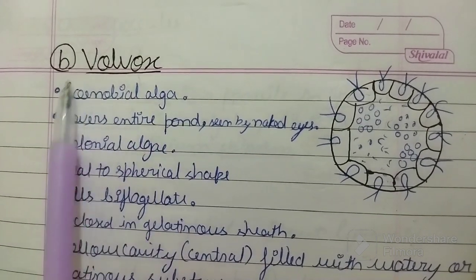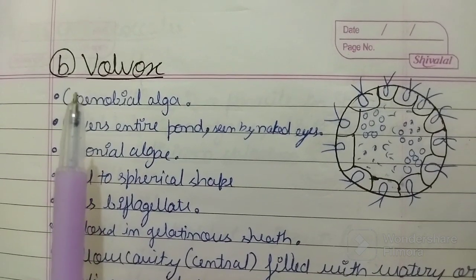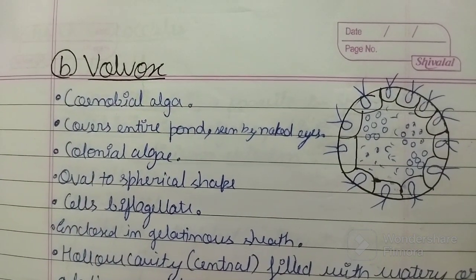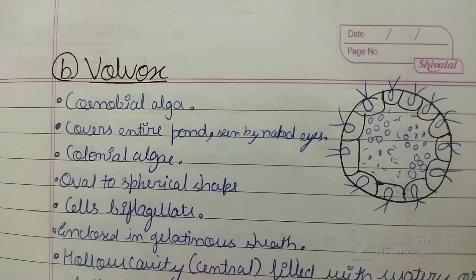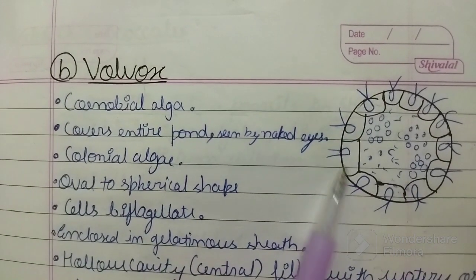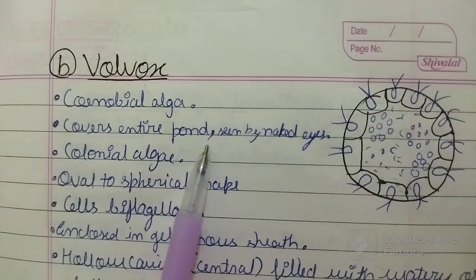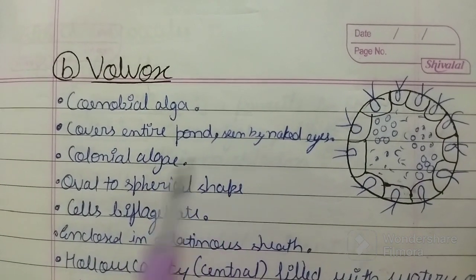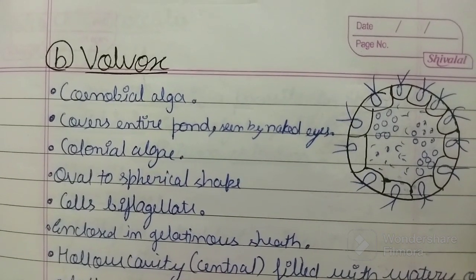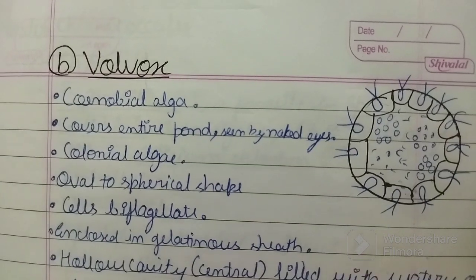It is a coenobial algae. Coenobial is a type of colony which has a definite number of cells and a fixed type of shape. You can see this in the diagram. It covers an entire pond and it can be seen by the naked eye. You can see it floating on the pond water also. It is a colonial algae.